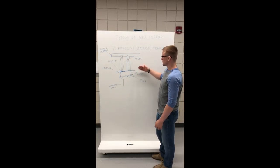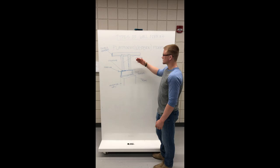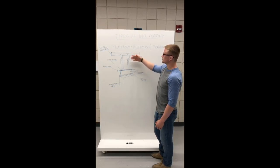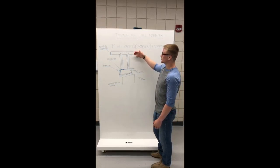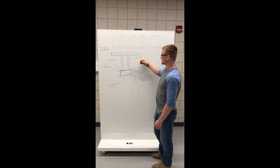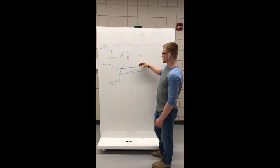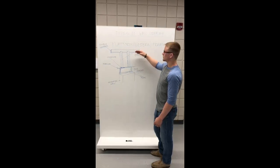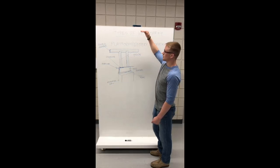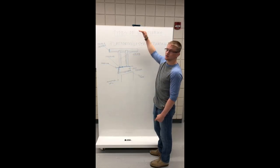Your first floor will have studs coming off of your sole plate that lead up to your double header. Then the process repeats with a new joist header and new subfloor, new sole plate, and then new studs on top of that.